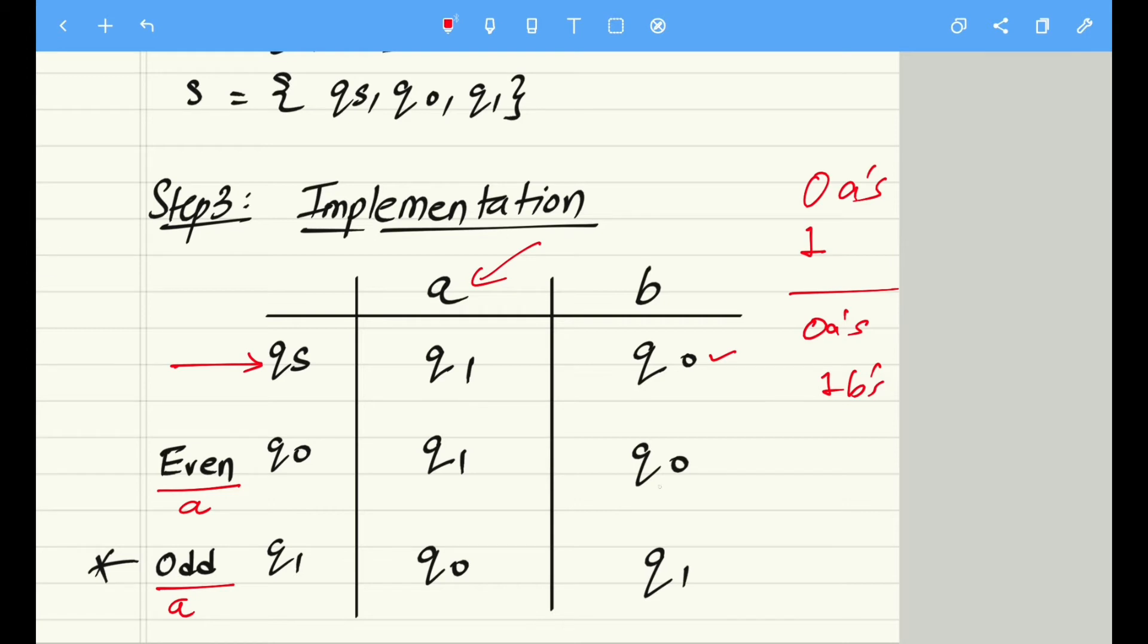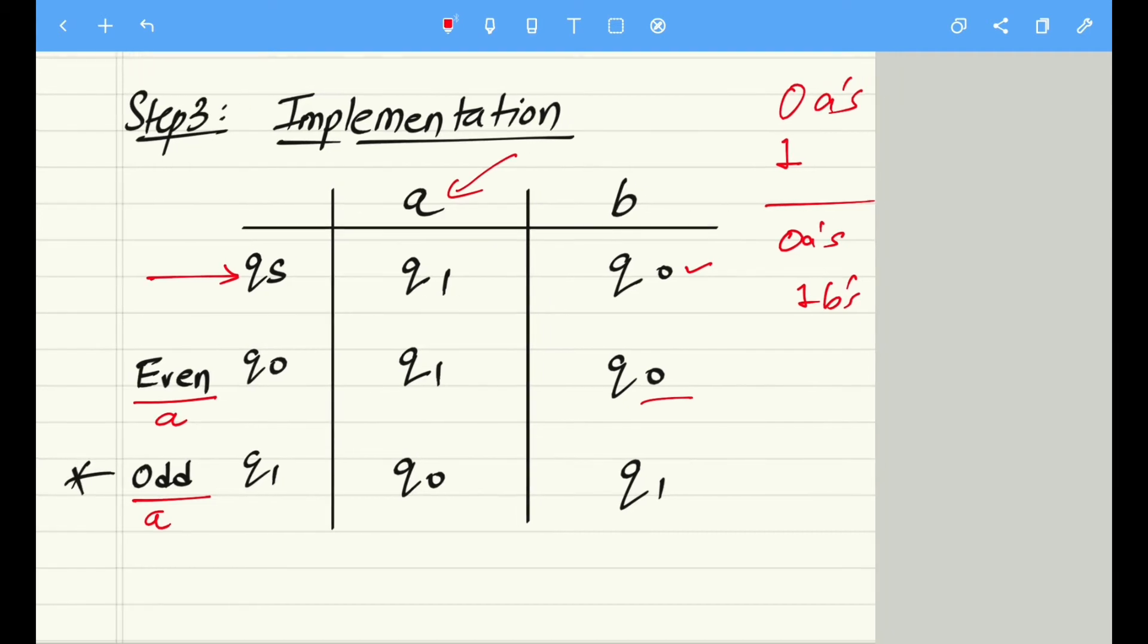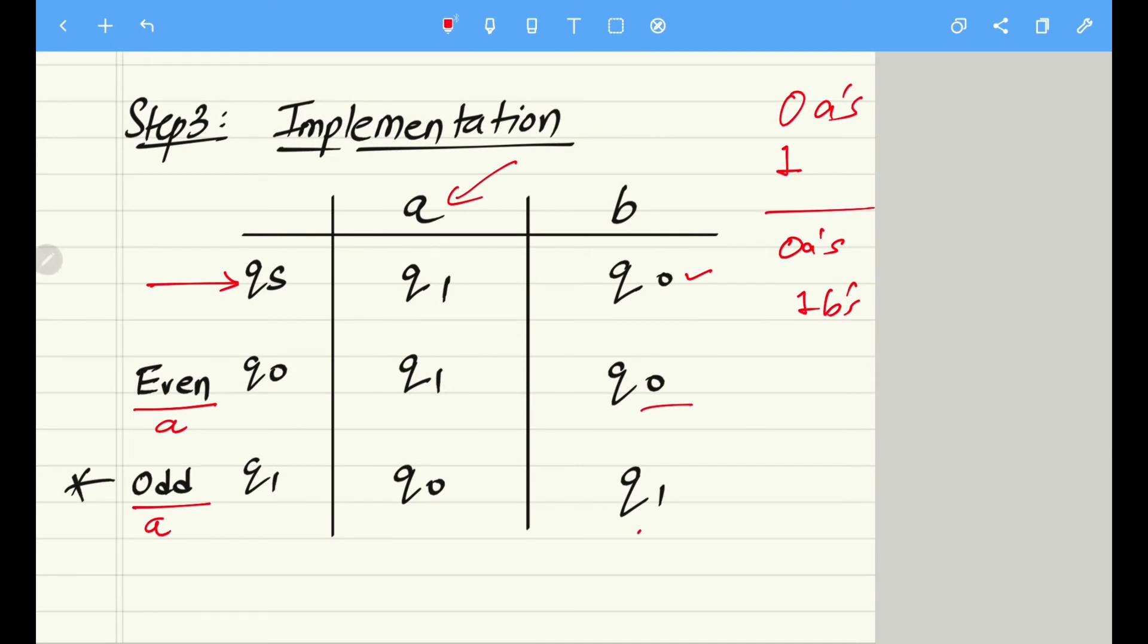Similarly, in q1 state we are already having odd number of a's. So if we encounter one more a, the number of a's become even and as a result it moves to q0 state. With the same logic, we can say that q1 state on reception of input b becomes odd number of a's only, because it was initially having odd number of a's. If it receives a b, the count of a doesn't change and as a result it remains q1 only.